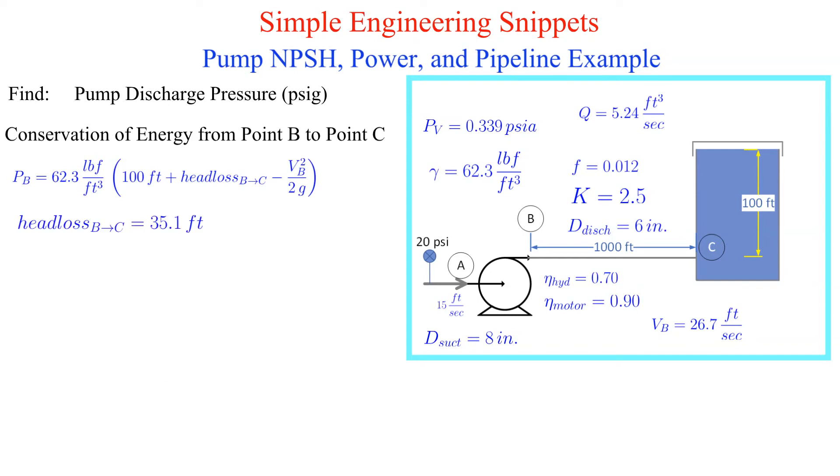Now going back to conservation of energy we plug everything in and convert to psig. We could ask why the answer came out as a gauge pressure not absolute pressure. The answer lies in the fact that we did not include atmospheric pressure acting on top of the water in tank. At that point we were working in gauge pressure.